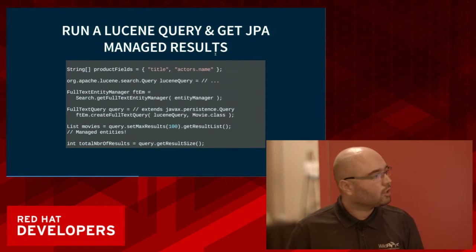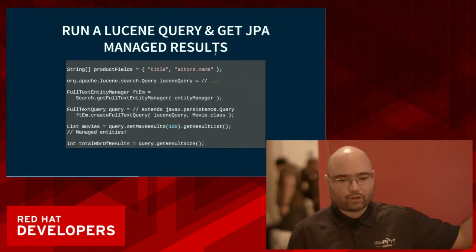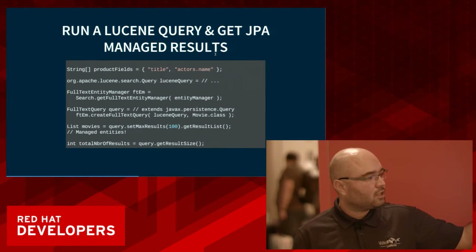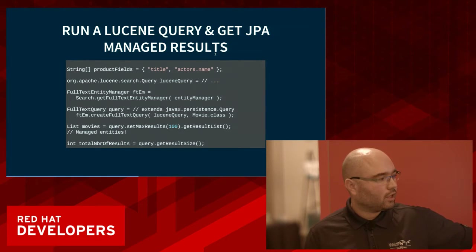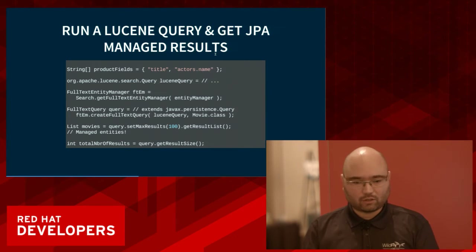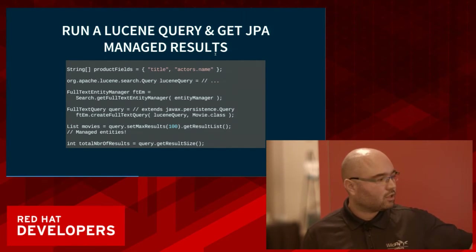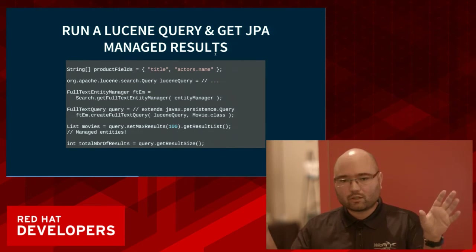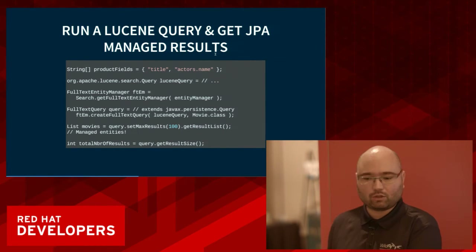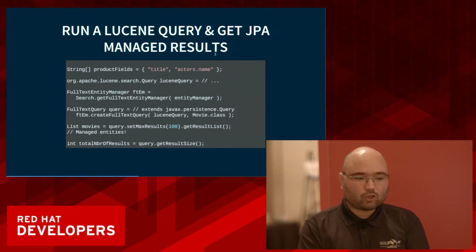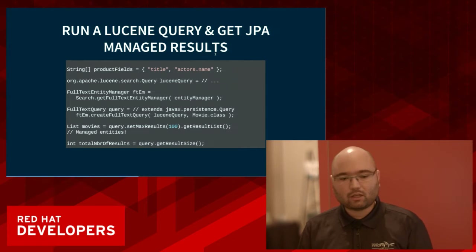How do you query this? Let's say we're targeting two fields — the title and the actor's name. You build a Lucene query, extract the full-text entity manager from an entity manager, and wrap the Lucene query into a full-text query specifying which types you're targeting. This full-text query is an extension of the JPA query — it implements setMaxResults, getResultList — and is compatible with any pagination or rendering framework. Best of all, even though the query runs on the index, it returns transactionally loaded and managed entities from the database.